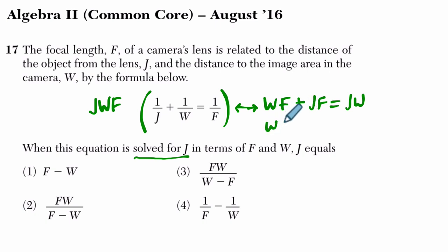Now, what I'm going to do is I'm going to subtract the j, f's on both sides. So I get j, w minus j, f. And I'm trying to solve for j, so I brought the j's over to the same side. And at this point, I'm going to factor out the j's on the right-hand side. So I get w, f equals j times w minus f.